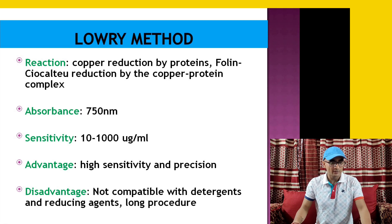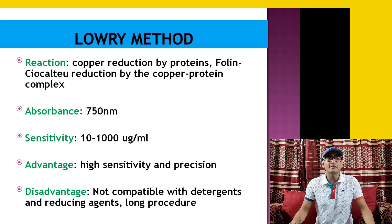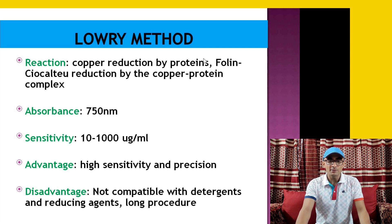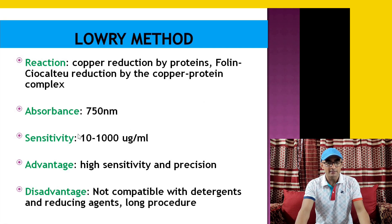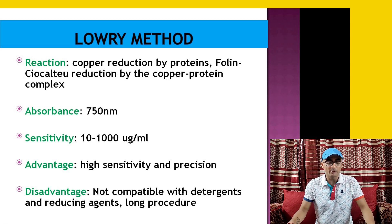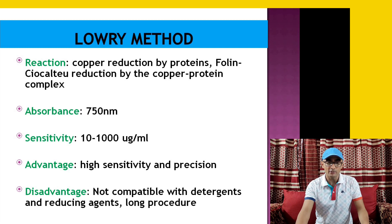This method is basically an extension of the biuret reaction. First, protein is allowed to react with alkaline copper sulfate. As a result, cupric ion is converted into cuprous ion, and that cuprous ion reduces a reagent called Folin-Ciocalteau reagent, forming a complex which absorbs at 750 nanometer wavelength. It is a very sensitive method, with a sensitivity range of 10 to 1000 microgram per ml concentration.